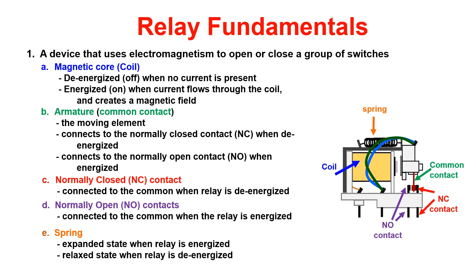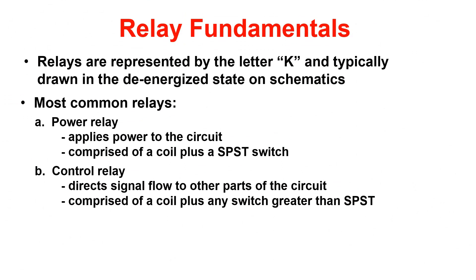There are multiple parts to a relay. Remember that relays are typically drawn in the de-energized state. The normally closed contacts are touching the common contacts. A magnetic core is utilized to develop a magnetic field, which allows the armature to be pulled into the normally open contacts, allowing current to flow from the common contact through the normally open contact. A spring returns the common contact to the de-energized state. Relays are represented on schematics using the letter K and are drawn in the de-energized state.